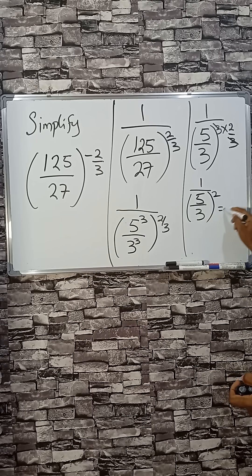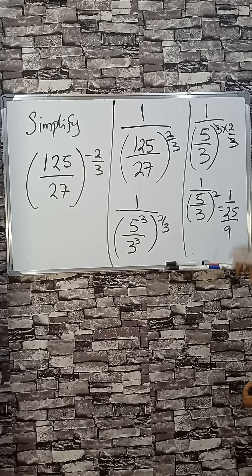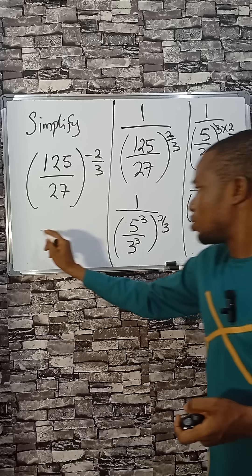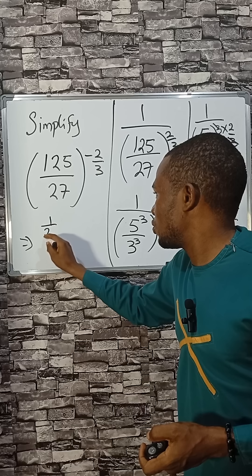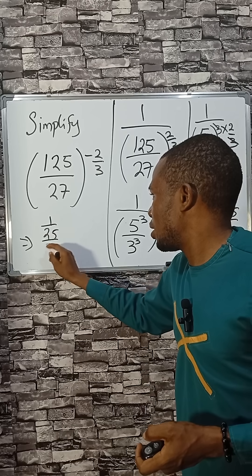That will give us 1 divided by 25, all over 9. I will take that to this side. From here, I have 1 divided by 25 divided by 9.